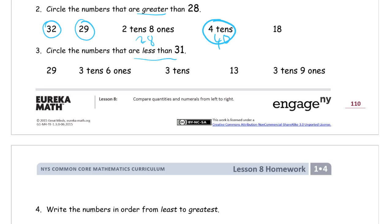Now we're circling numbers that are less than 31. Well, anything in the 20s is going to be less than anything in the 30s, so 29 is less than. Three tens six ones is 36, and that's going to be more than 31 because it's got the same number of tens but five more ones. It's greater than, so I can't circle it. Three tens without any ones is just 30. That is less, that's one less than 31. 13 is a ten and three ones. It has two less tens, that has to be less. And three tens nine ones, that's 39. That's greater than 31, so I can't circle that one.